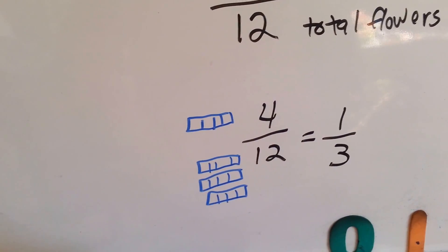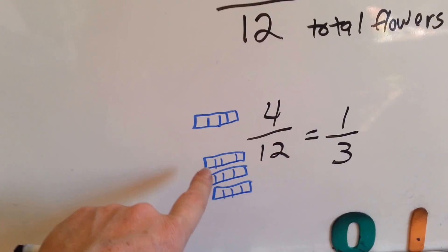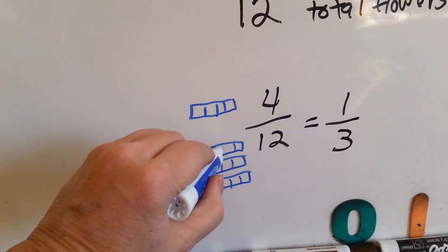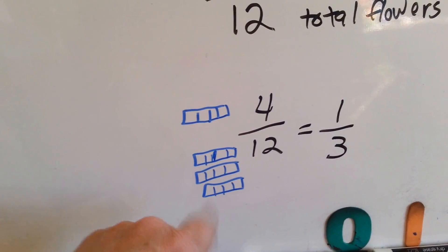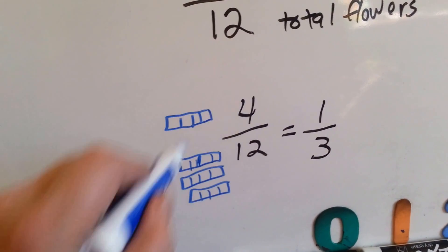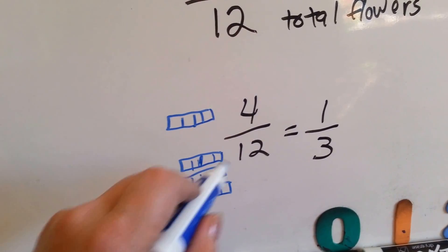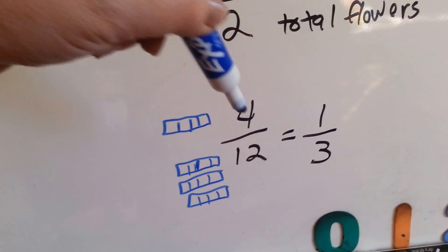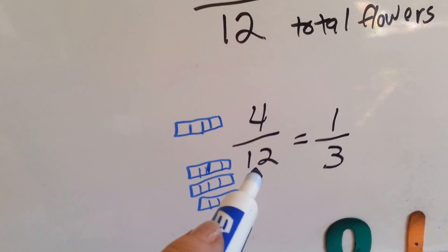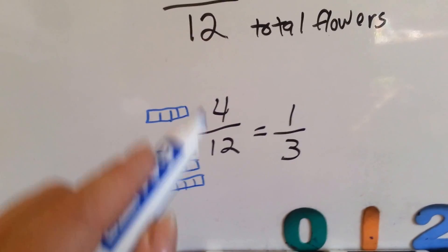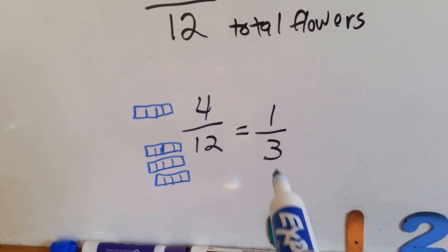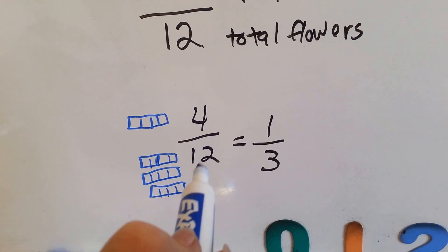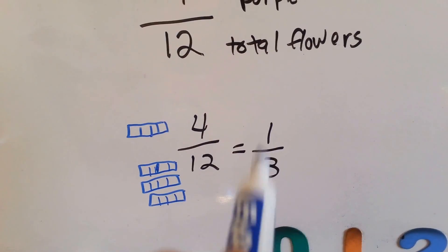So each of these bars is a bar of four. There's one bar of four here, three bars of four in this twelve. Think of it that way. One four can fit into this twelve three times. So the fraction four twelfths is equal to one-third. One of these fits into here three times. One-third.